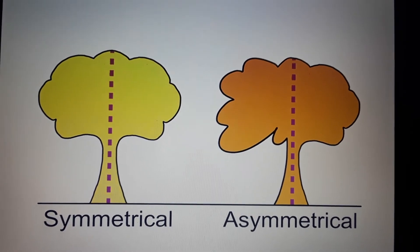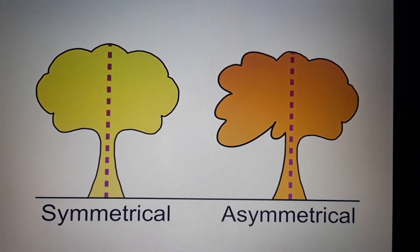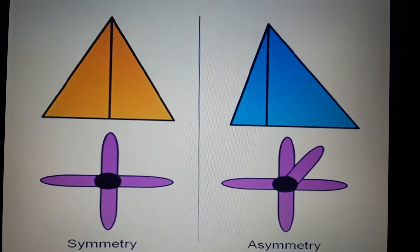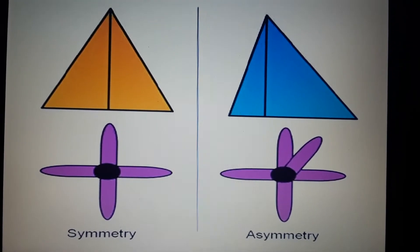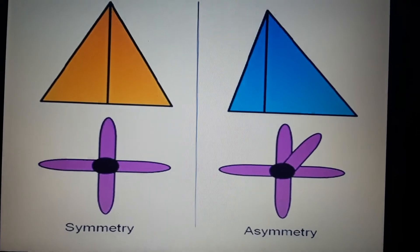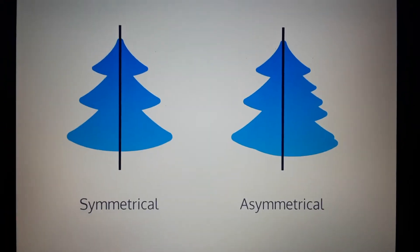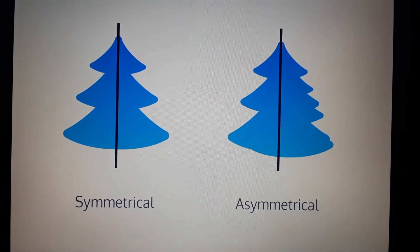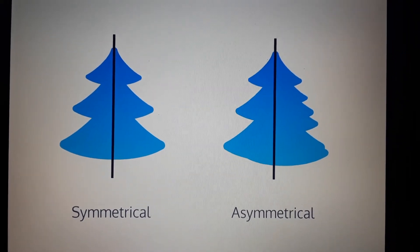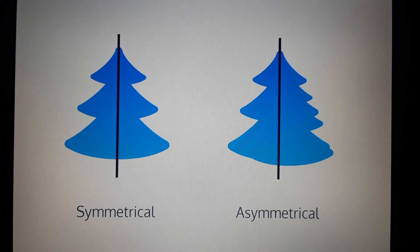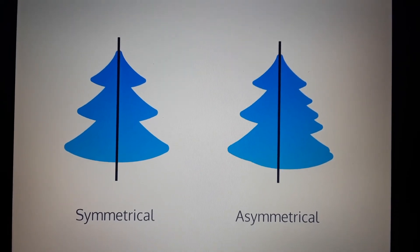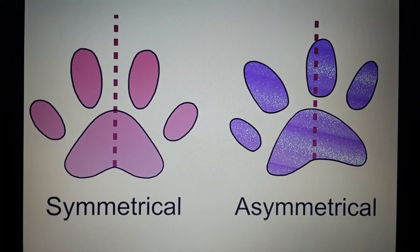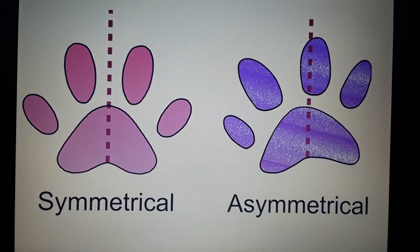Look at these pictures — the first one is symmetrical, the second one is asymmetrical. Look at these pictures — the first picture is symmetrical, the second picture is symmetrical. Look at these two trees — the first one is symmetrical, both sides look the same. The second one is asymmetrical — the sides are unequal.